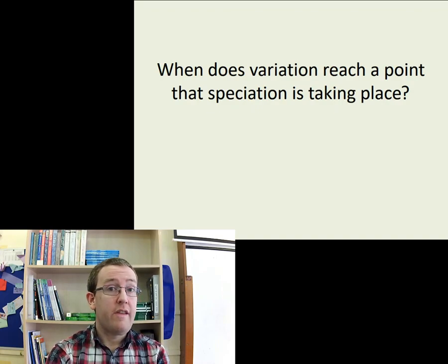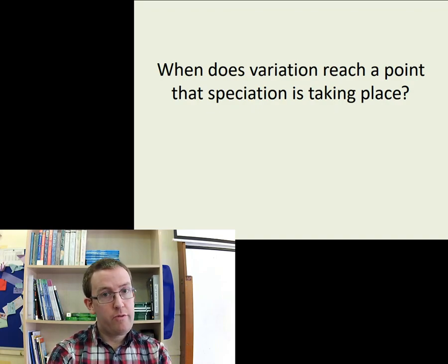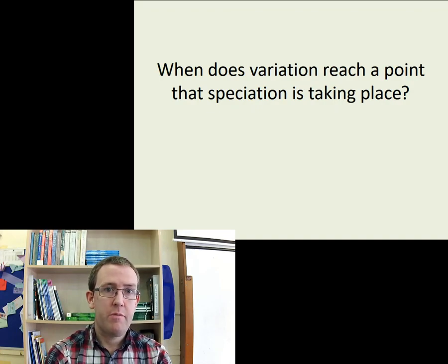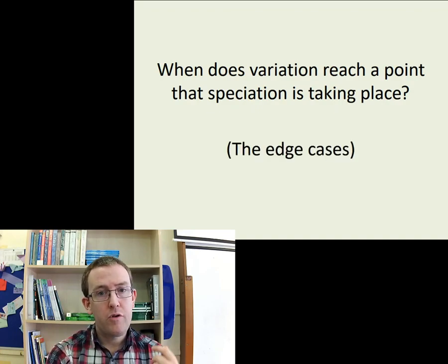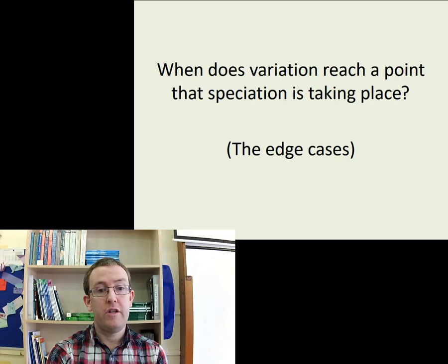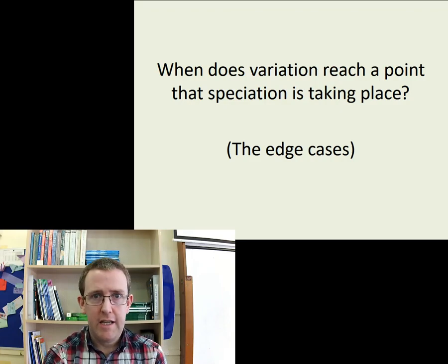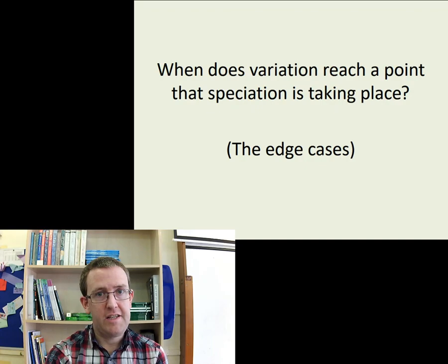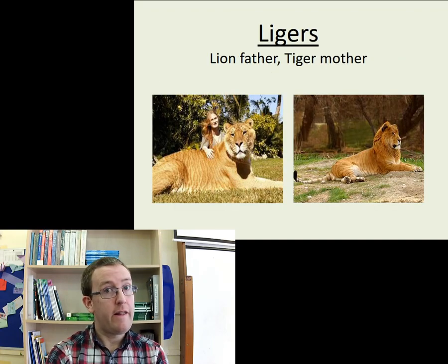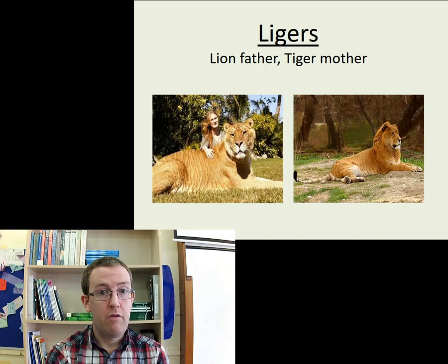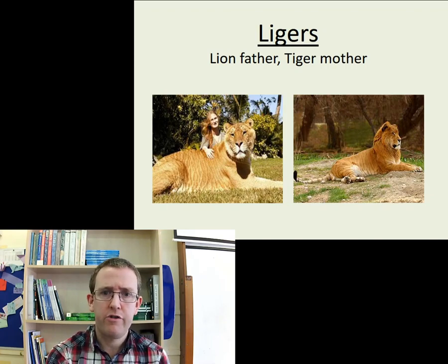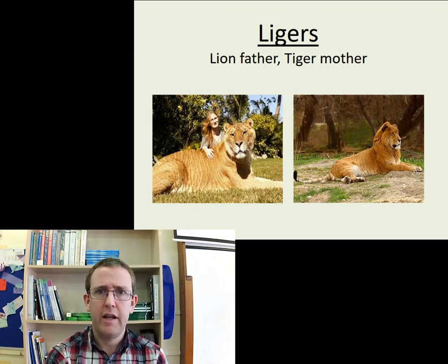There are always edge cases. We as humans are always trying to put things into categories, but biology doesn't work that way — it's a continuous spectrum. Famous examples include the liger, which is a lion father and tiger mother. They always come out enormous for some reason — very, very large animals, as you can see with the person standing next to one.